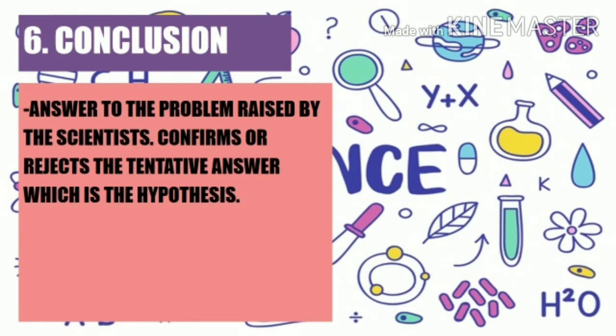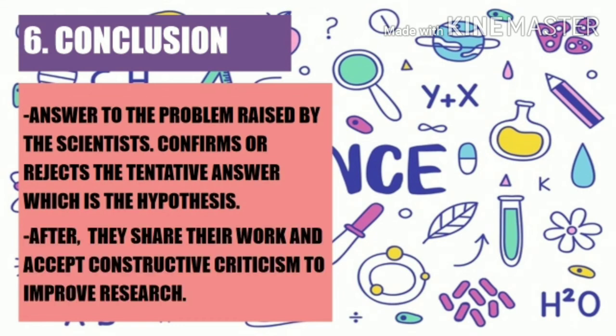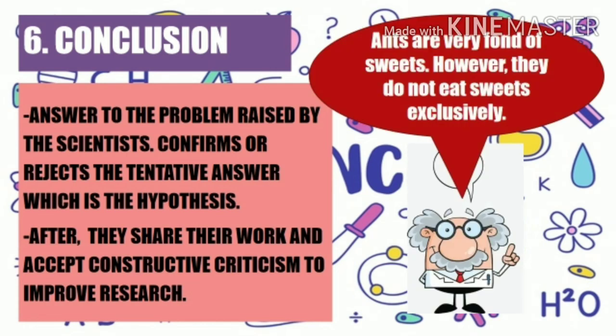After analyzing the data comes the conclusion. The conclusion is the answer to the problem raised by scientists. It confirms or rejects the tentative answer, which is the hypothesis. Scientists also share their work and accept constructive criticism to improve research. Based on the analyzed data, our conclusion is: ants are fond of sweets; however, they do not eat sweets exclusively. This confirms that our hypothesis — that ants are fond of sweets — is correct.